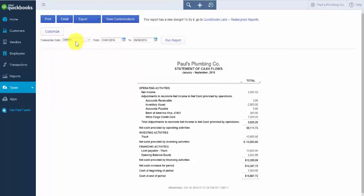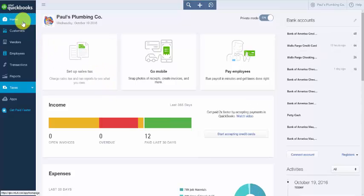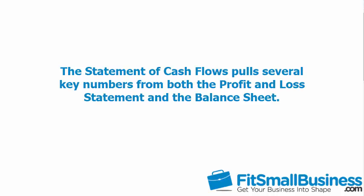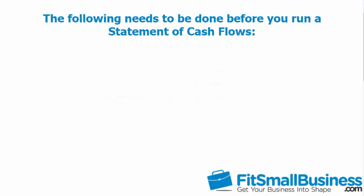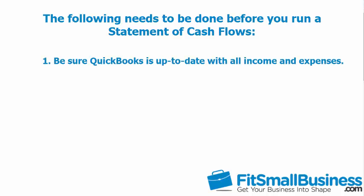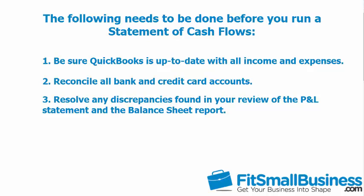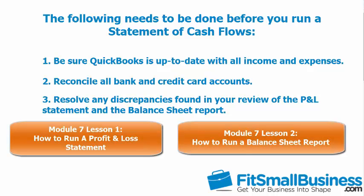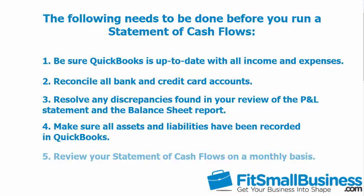Now that you have a better understanding of what the Statement of Cash Flows will tell you about your business and how to create one in QuickBooks Online, there are a few things you should implement as soon as possible. The Statement of Cash Flows pulls several key numbers from both the Profit and Loss Statement and the Balance Sheet, so it's very important that the following have taken place before you run it. First, be sure QuickBooks is up to date with all income and expenses. Second, reconcile all bank and credit card accounts. Third, resolve any discrepancies found in your review of the Profit and Loss Statement and Balance Sheet. For more information on those reports, view our other lessons by clicking the link. Make sure all assets and liabilities have been recorded in QuickBooks. And finally, review your Statement of Cash Flows on a monthly basis.